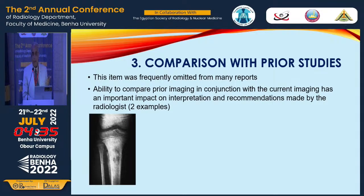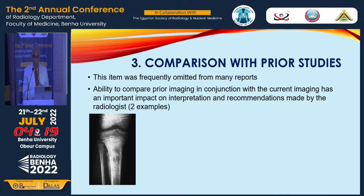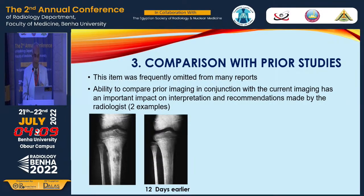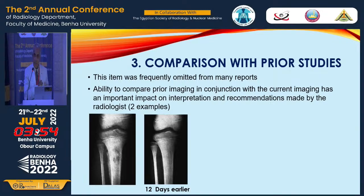Comparison with prior studies: when there is a prior report or film, we have to look at it. For example, if a patient — a child — has a destructive bone lesion in the region of the tibia, and this patient has a prior examination that was normal, then the aggressive bone lesion that exists now cannot be a long-standing tumor. Within 12 days it could be osteomyelitis rather than osteogenic carcinoma. This comparison is very important.